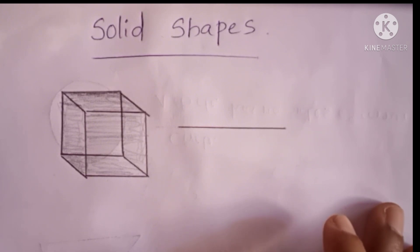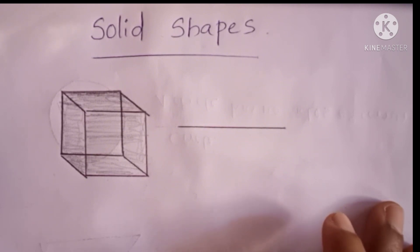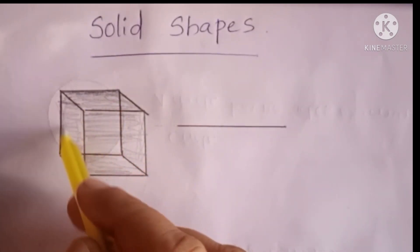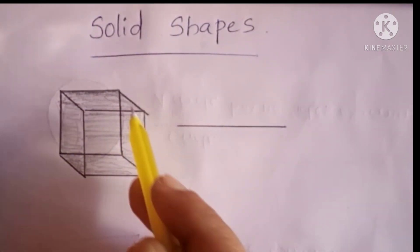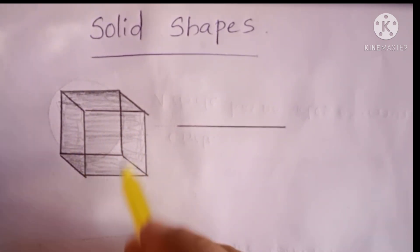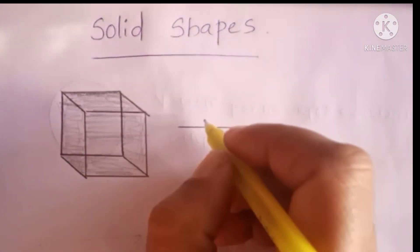Have you seen a die? You can see a die in snake and ladders. Yes, its shape is cube. This is the shape of that die. This shape is called cube.